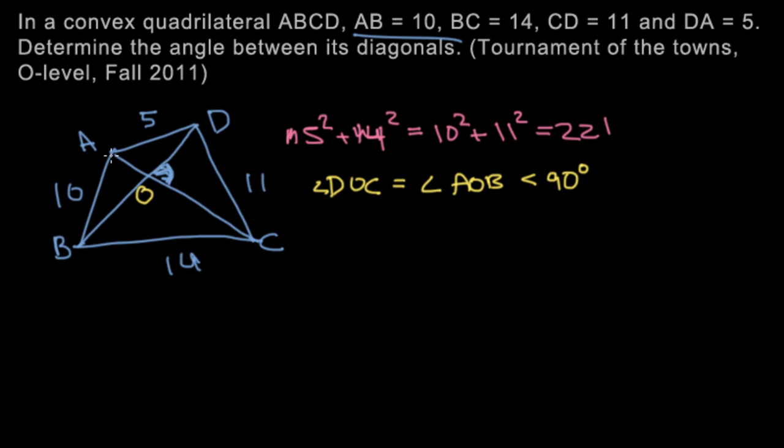Consider this triangle right here, AOB, and DOC. Because we said that angle DOC is less than 90 degrees, these two triangles are acute. And we can say, this is about acute triangles, that AO squared plus BO squared is greater than AB squared. And again, because this is an acute triangle.